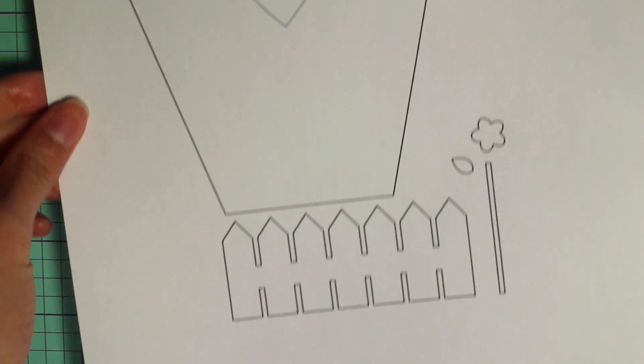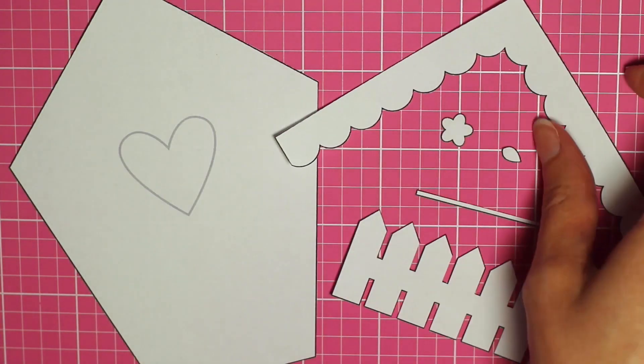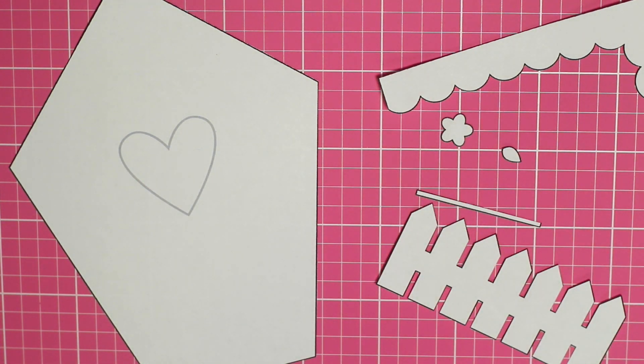The first thing you'll need to do is go to the link in the description where you can get these patterns and print them out. You want to cut them out and then set these pieces aside and we're going to cut out this heart in the birdhouse.